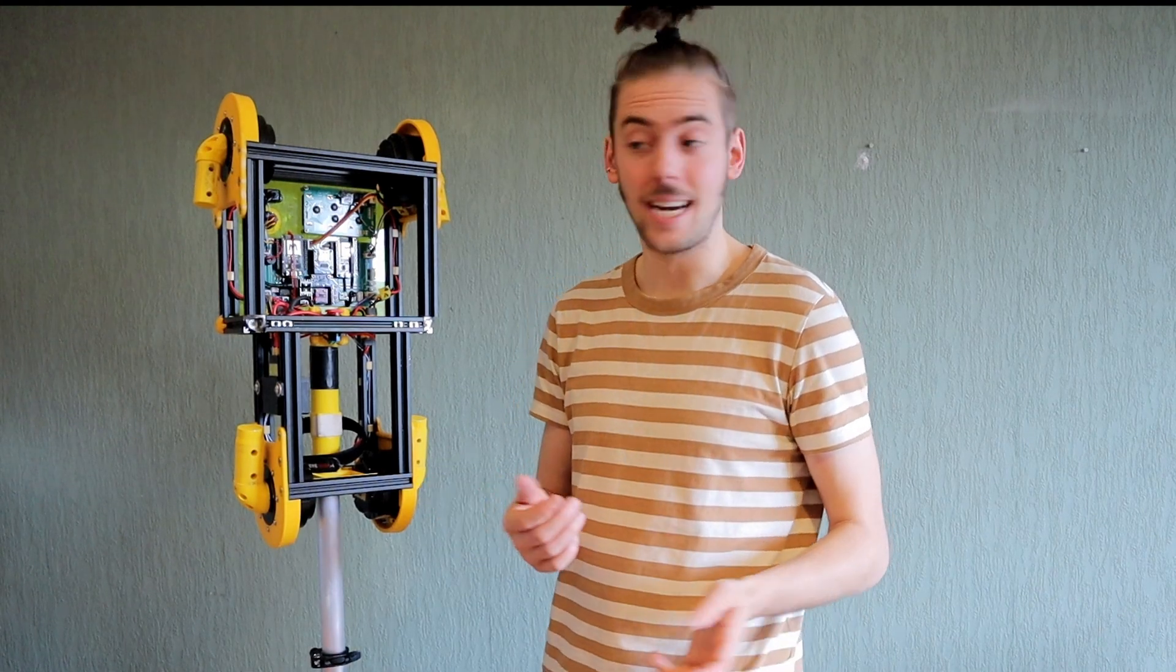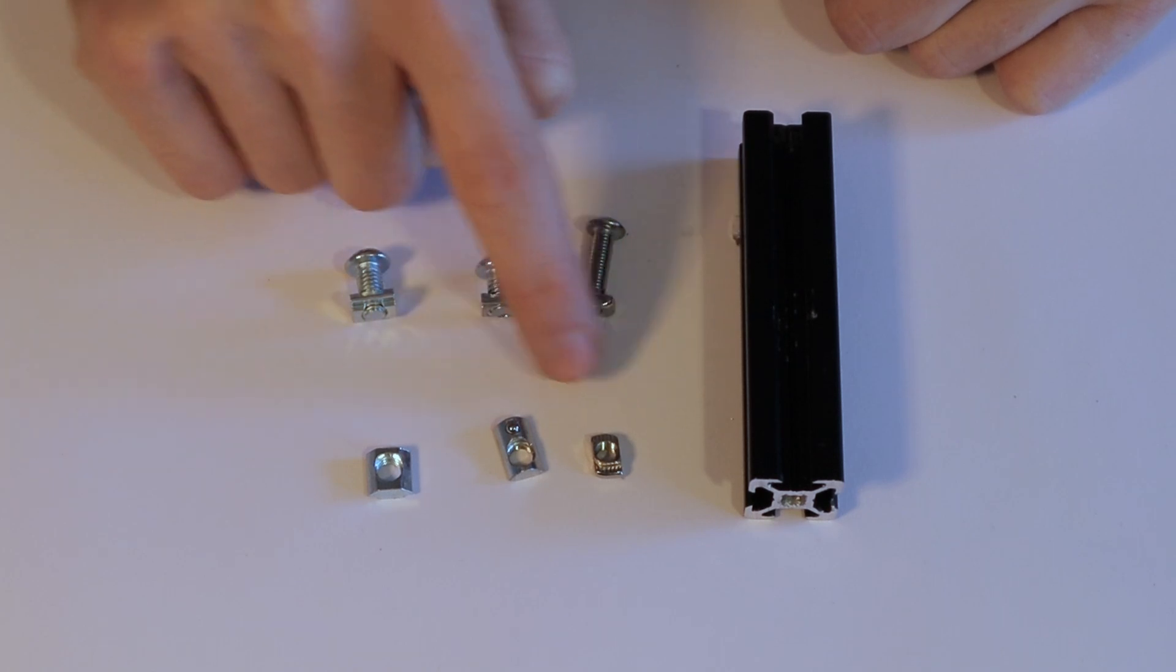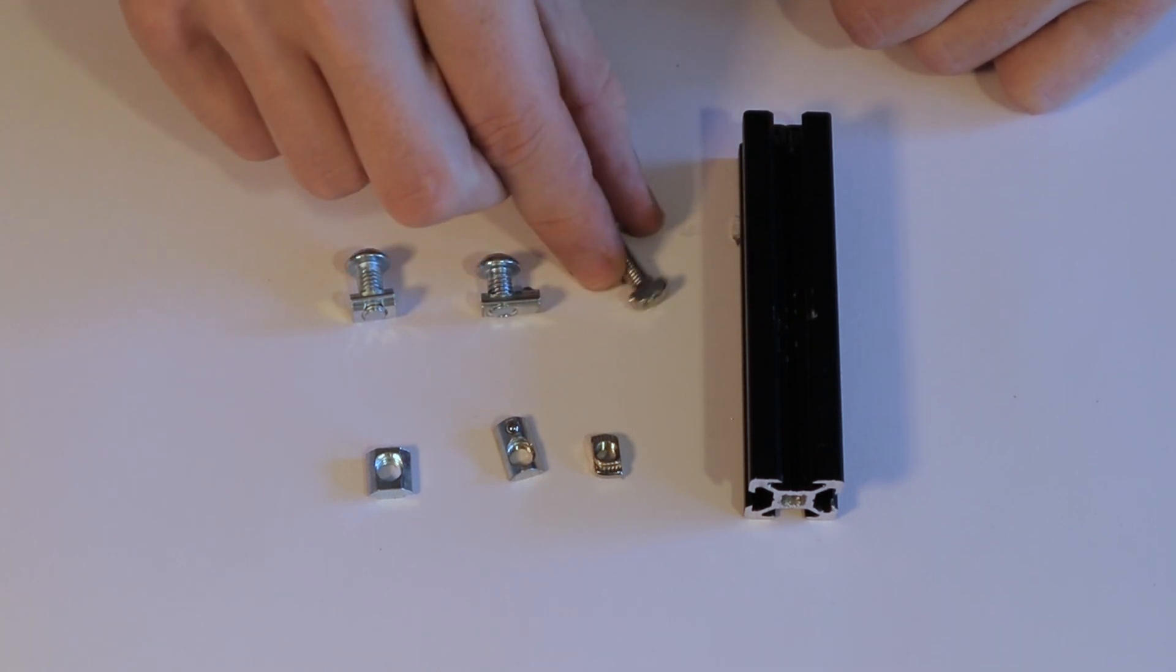And then the last thing I needed to decide are the kind of nuts I wanted to use in the slots. There's three types of nuts that you can use: the twist nut, the roll nut, and the slide nut. And the first two are the most flexible because you can place them in the middle of the beam.